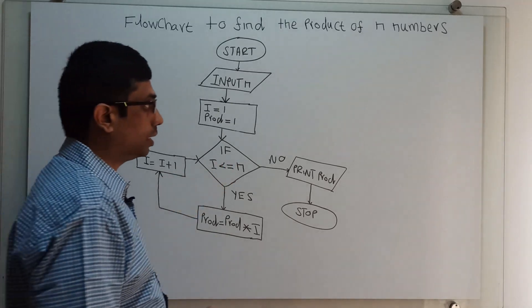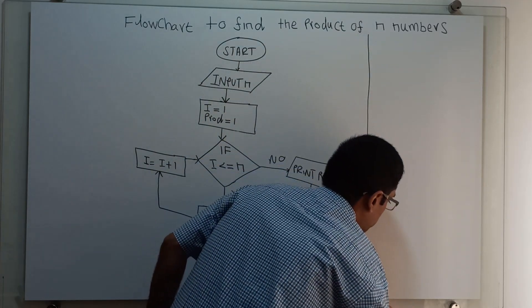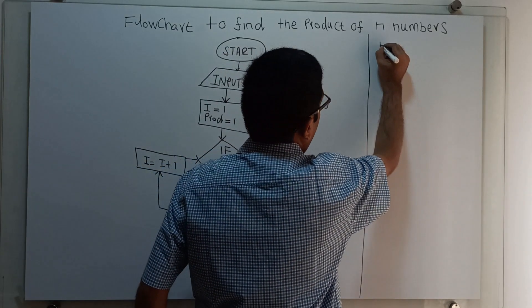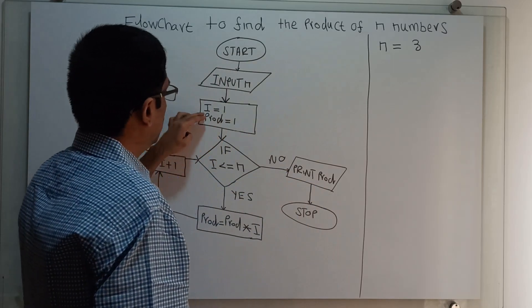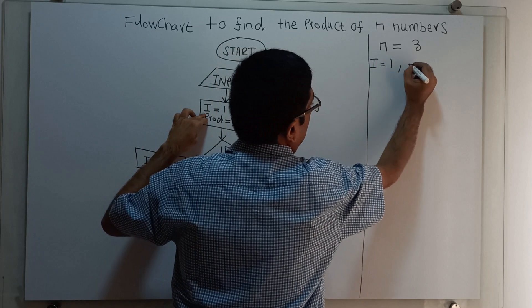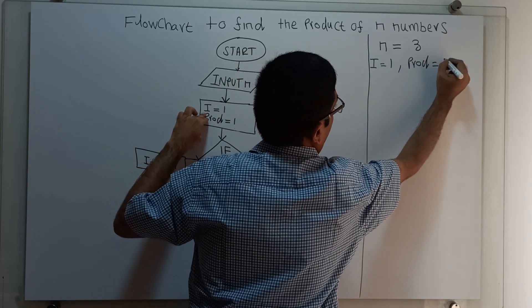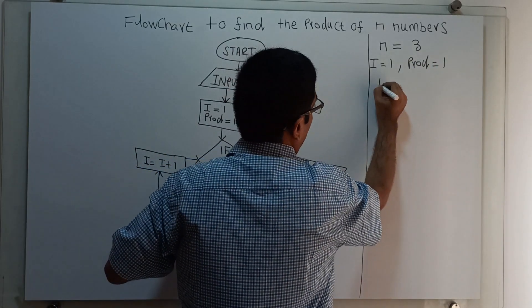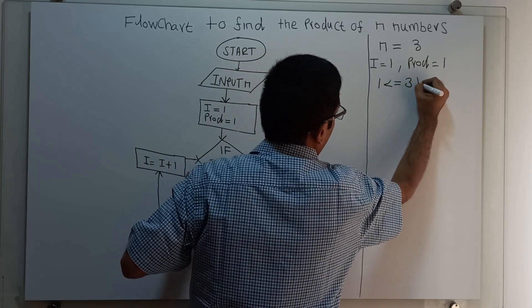We will trace how the flowchart works. I am giving the value n equal to 3. I am utilizing i equal to 1 and prod equal to 1. Now check if i less than or equal to n — that means 1 less than or equal to 3 — the value is true.